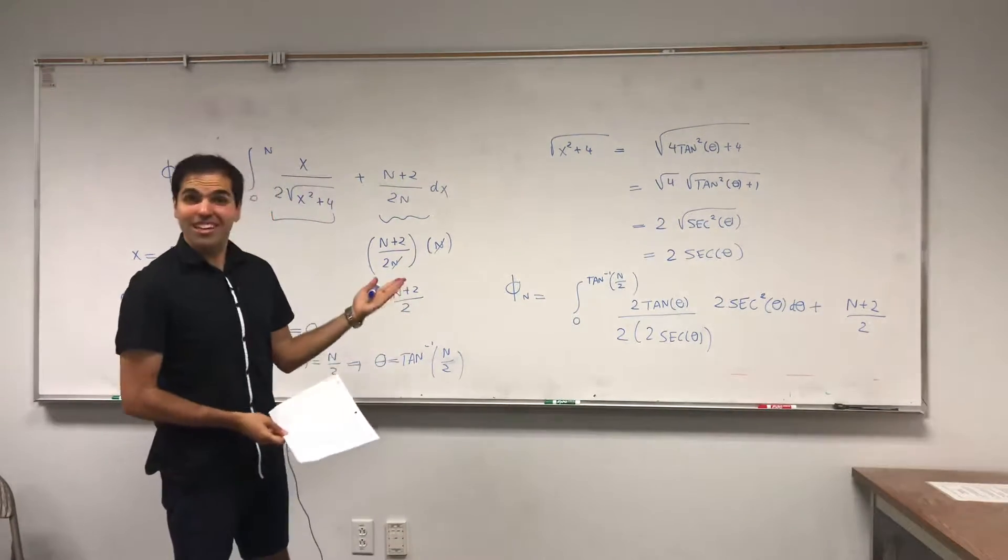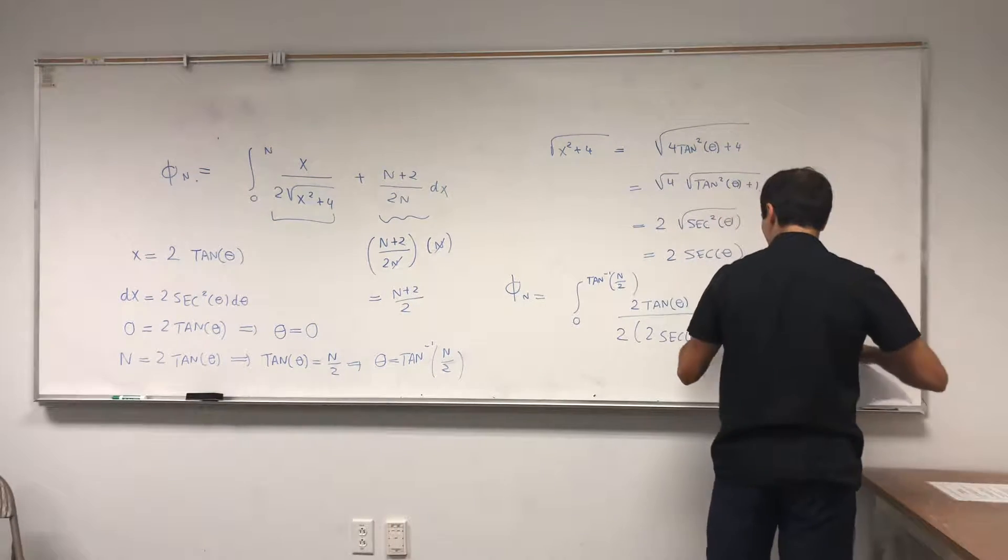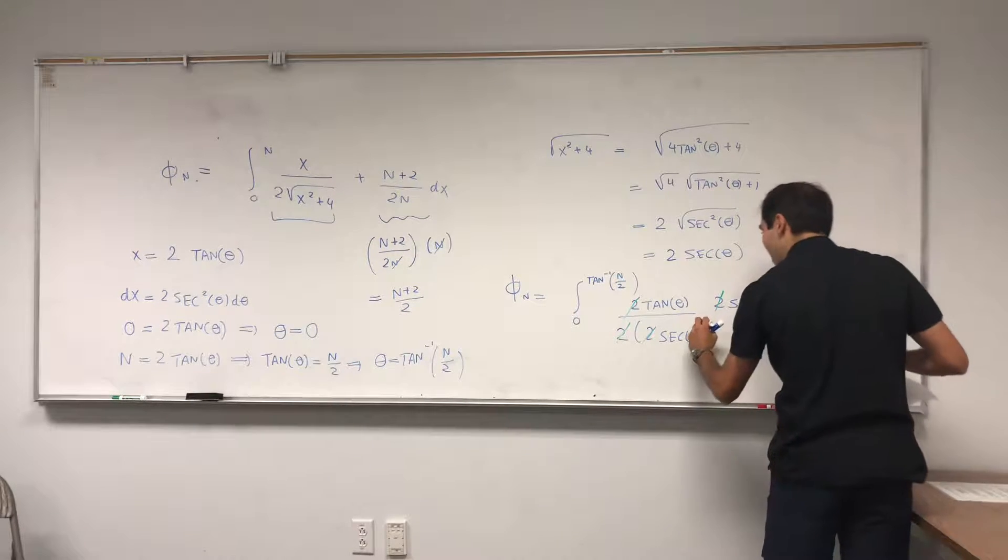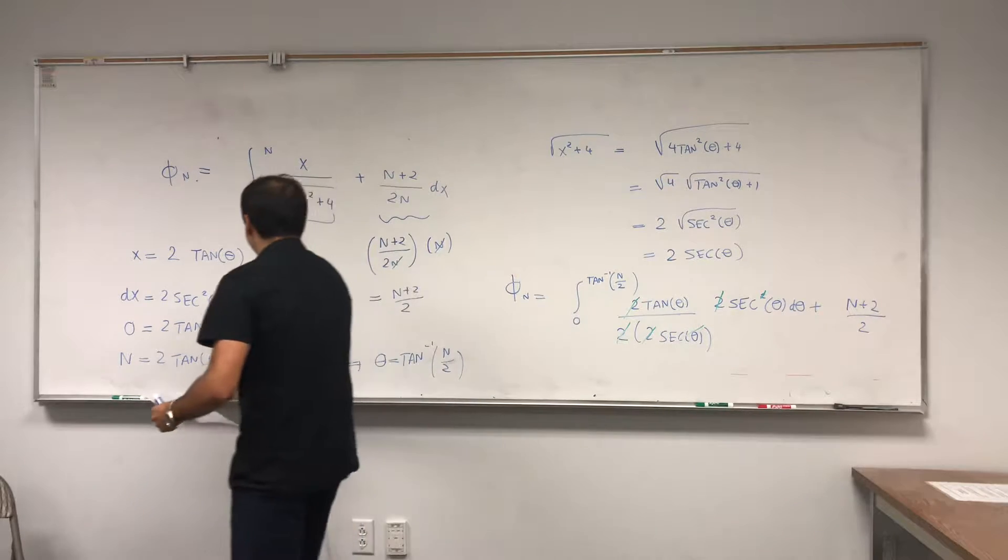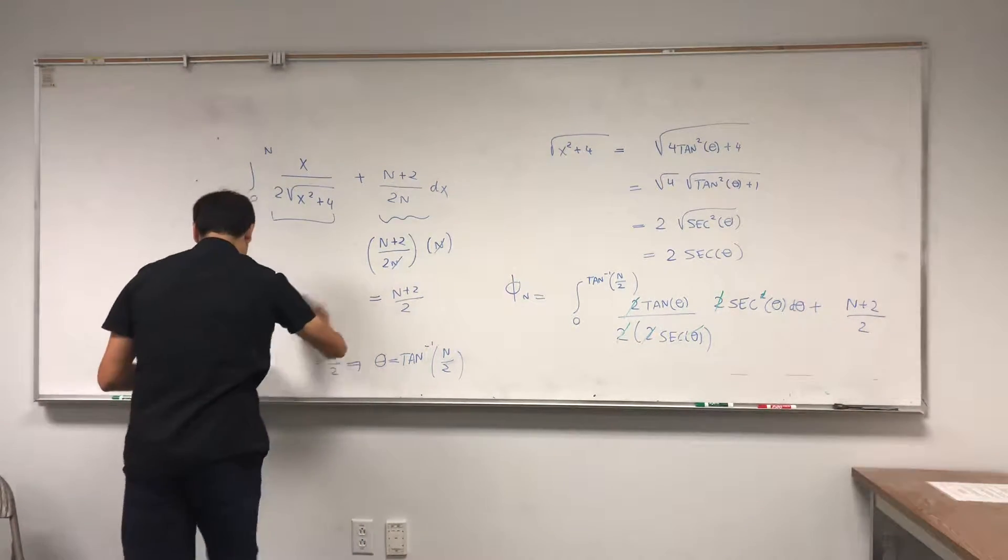Okay and we get a very nice simplification. So first of all all the 2s they cancel out, and one of the factors of secant cancels out. So after this big explosion you're just left with secant times tangent.